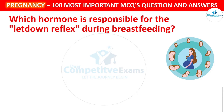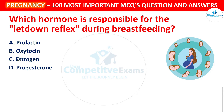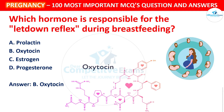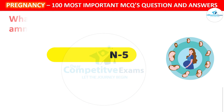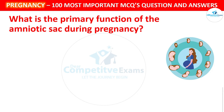Which hormone is responsible for the let-down reflex during breastfeeding? Your options: Prolactin, Oxytocin, Estrogen, or Progesterone. The correct answer is Oxytocin. Oxytocin stimulates the let-down reflex, allowing milk to flow from the mammary glands during breastfeeding.